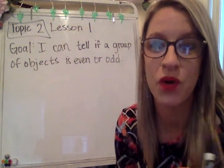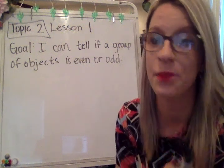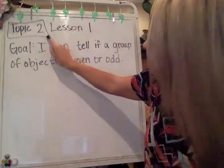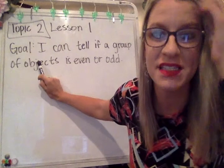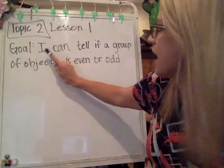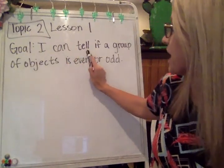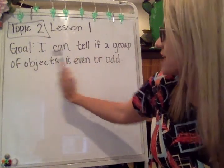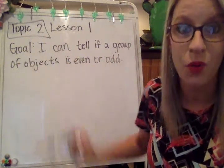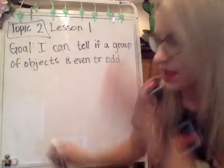We're going to be working on lesson number one from topic two. Our goal for this lesson: I can tell if a group of objects is even or odd.